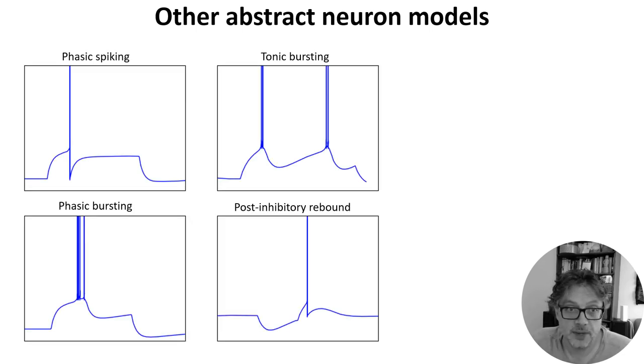Some of the behaviours of real neurons that we haven't seen in our models so far include phasic spiking, that's just spiking at the start of an input, bursting, that's multiple spikes,